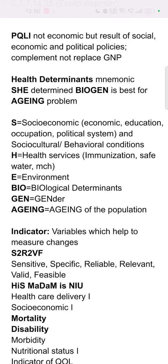Hi everyone, welcome to episode number two of Community Medicine Cheats. This topic is health determinants. We will see the mnemonic to remember the health determinants. The mnemonic is: 'She Determined Biogen Is Best For Aging Problem.'